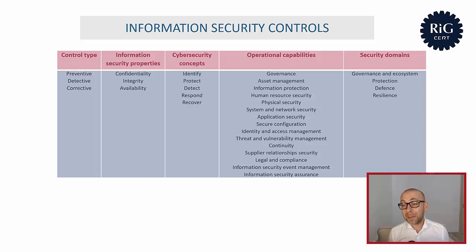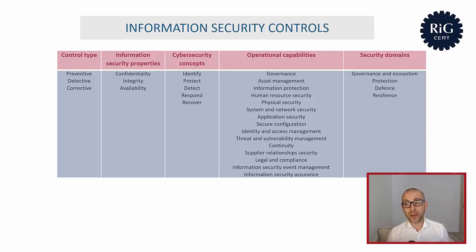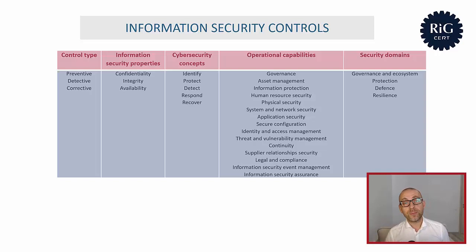Operational capabilities attributes are more numerous — 15 exactly: governance, asset management, information protection, human resource security, physical security, system and network security, application security, secure configuration, identity and access management, threat and vulnerability management, continuity, supplier relationship security, legal and compliance, information security event management, and information security assurance.